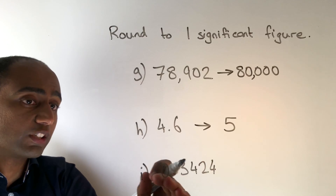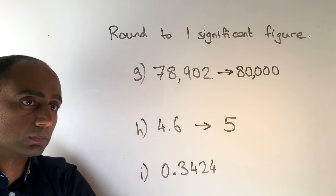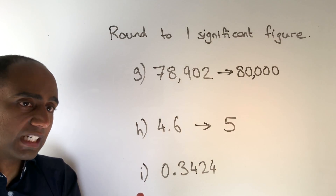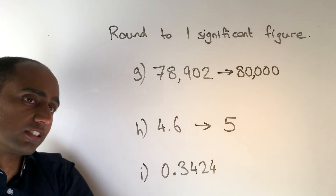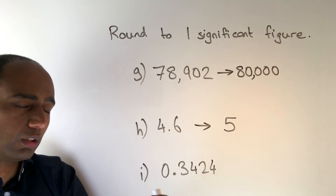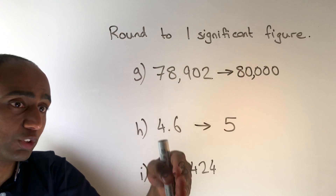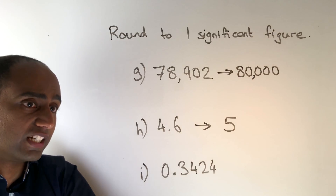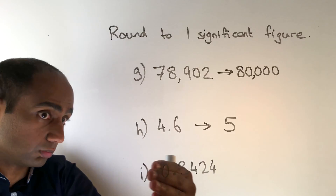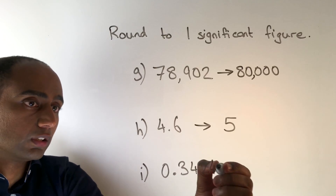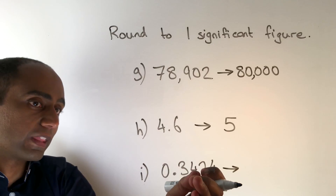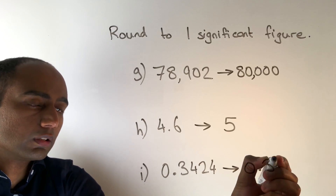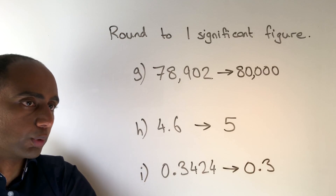In part I we've got 0.3424. The biggest place value column might appear to be the units column, but let's be careful — we haven't got any units, it's just a zero placeholder. So effectively the biggest place value column we're actually using is the tenths column, and we want to round this to the nearest tenth, or to one decimal place. Look at the next digit along: that's a four so we're going to round down. To one significant figure this is 0.3.